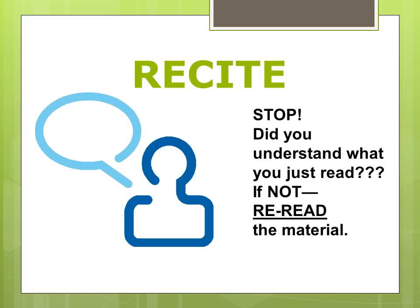Reciting allows a reader to check comprehension. To recite, a reader needs to summarize the information and put it into their own words. If saying information aloud feels funny, then a reader can decide to create graphic organizers or discuss the information with a friend. If you cannot recall and summarize the information, reread the text.